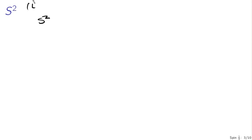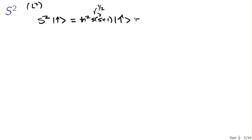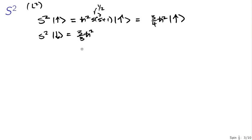Consider S squared. We know S squared acting on the spin up state gives the eigenvalue h-bar squared times S(S+1). With S equal to one-half, this is three-fourths h-bar squared. The spin down state is also an eigenstate of S squared with the same eigenvalue, three-fourths h-bar squared.